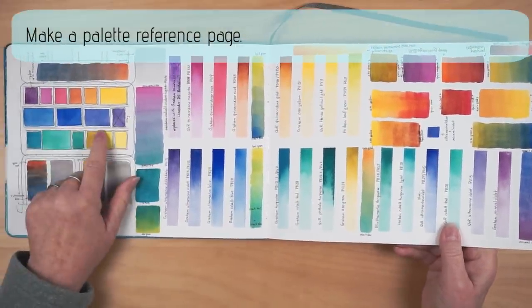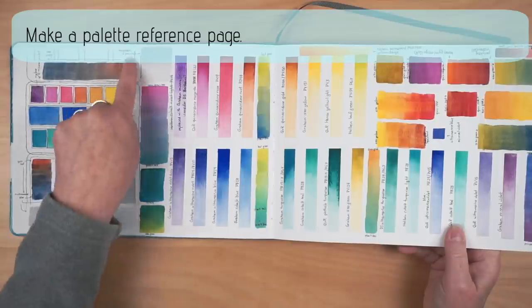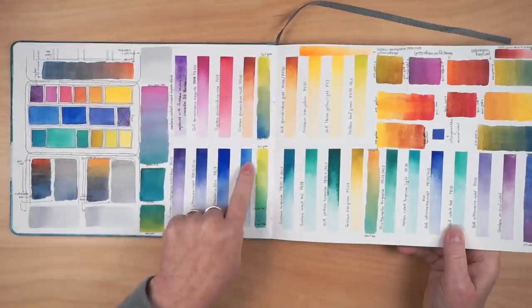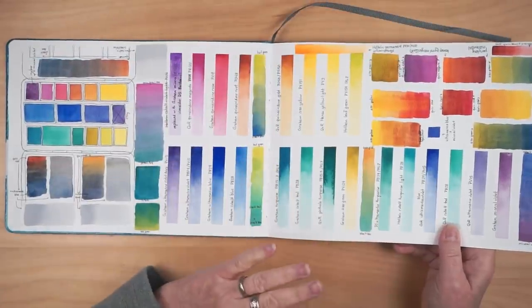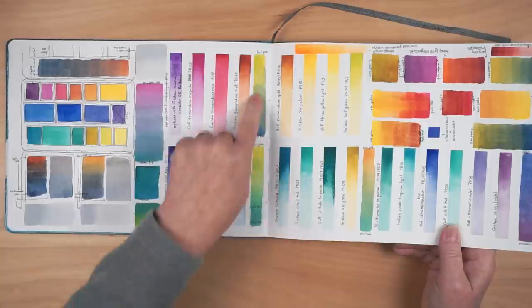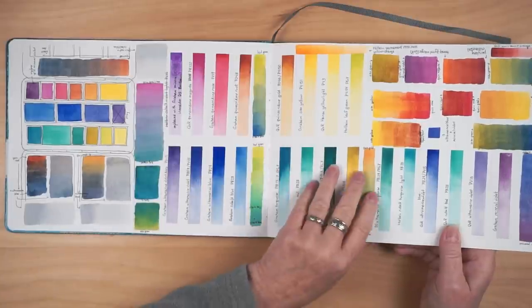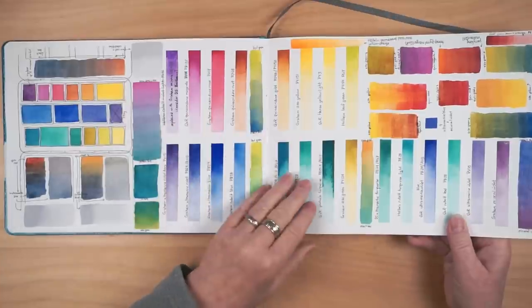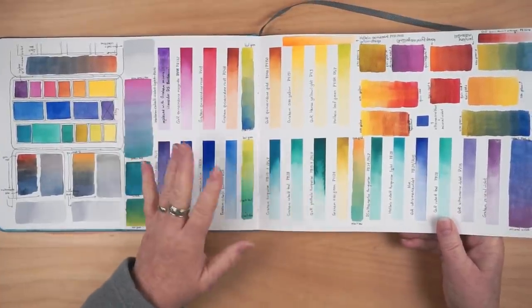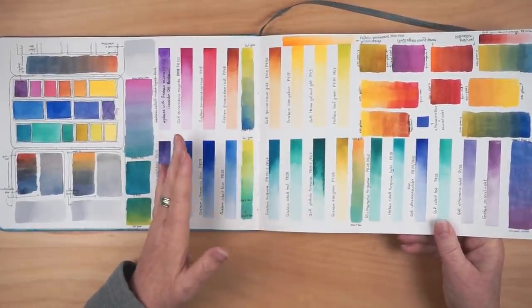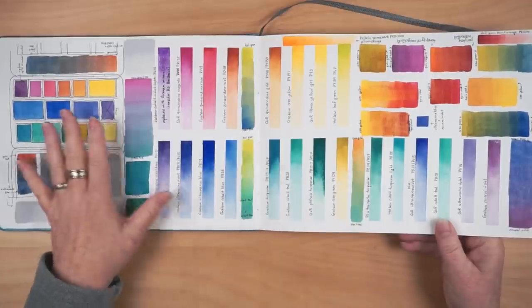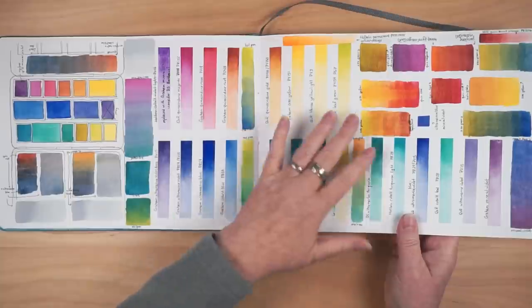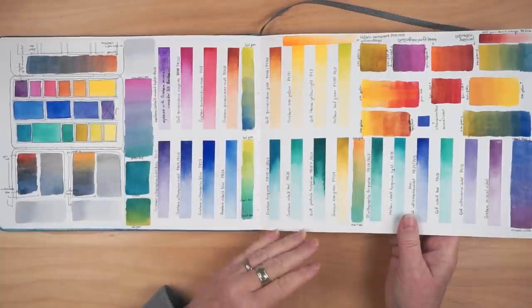Another thing you can do is make little reference pages for yourself. So here I had set up a new travel palette. And I drew a little diagram of the palette and filled in the colors. And then I swatched each color. Then I came back on another day and started in between looking at combinations of the colors to see how my various graded washes might look. This is very low stress. I know I can do it. I don't have to do it all at once. And it's a great reference when I'm using this travel palette elsewhere to paint in this sketchbook. I can flip back to this page and look at all the things I can do with these colors.